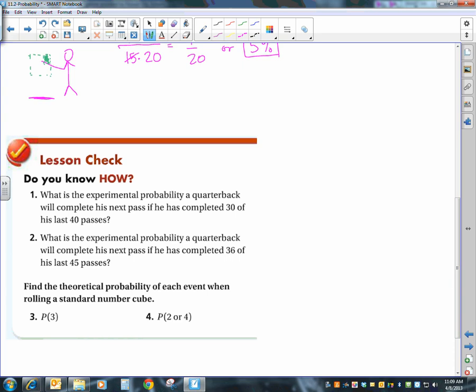So I have 4 more problems to do. If you want to pause, read the problems, then you can play it back and make sure that you are doing things correctly before you're starting your assignment. What's the experimental probability of a quarterback will complete his next pass if he completed 30 of the last 40 passes? That's the key right there is experimental.